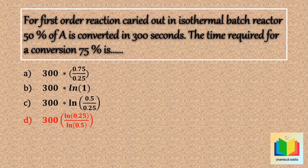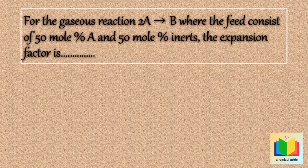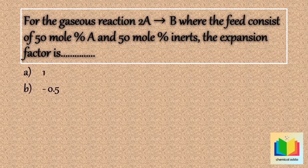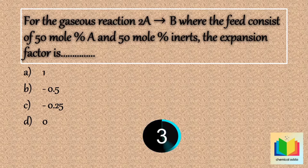Next question: for the gaseous reaction 2A gives B, where the feed consists of 50 mole percent A and 50 mole percent inerts, the expansion factor is — option A: 1; option B: −0.5; option C: −0.25; option D: 0.